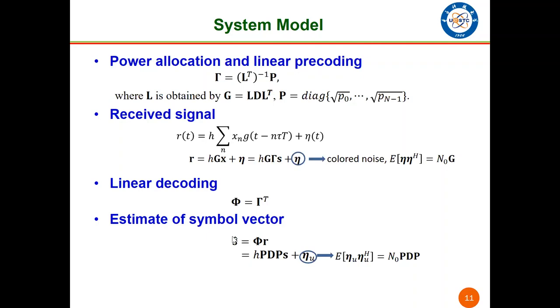The linear decoding matrix phi equals the transpose of gamma. Finally, the estimate of the symbol vector is HPDPs plus eta_u, where the covariance matrix of eta_u is n_0 PDP. So what's the optimum value of P?